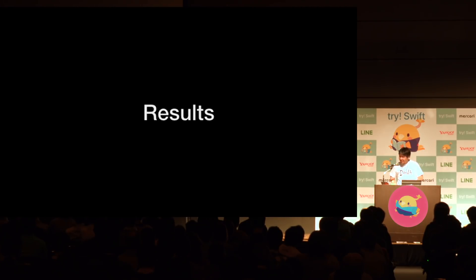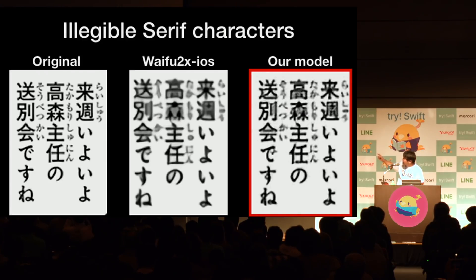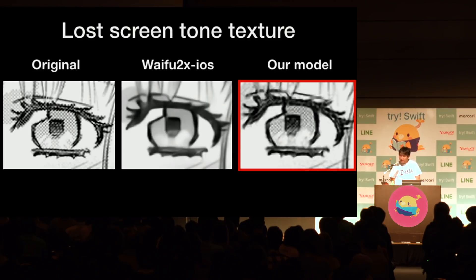Let me show the training result. The illegible text characters problem was improved. And the screen tone texture problem was improved too. So I was able to get a good SR model.